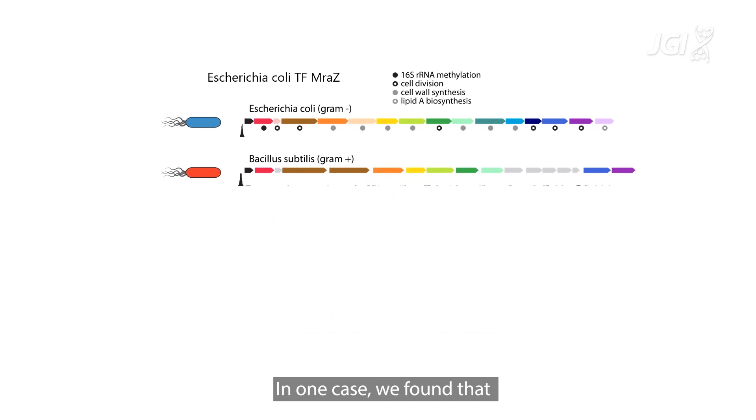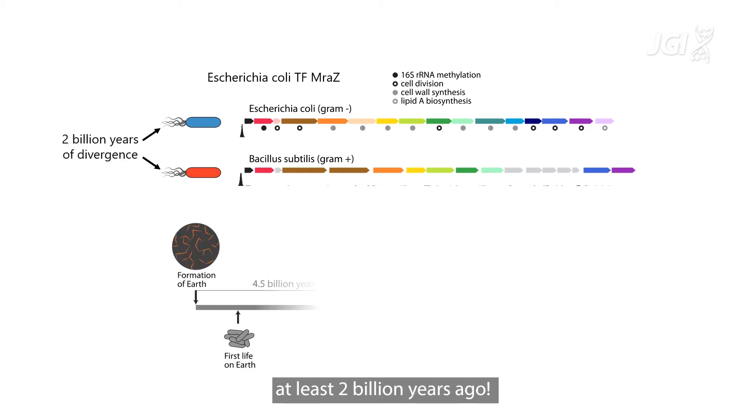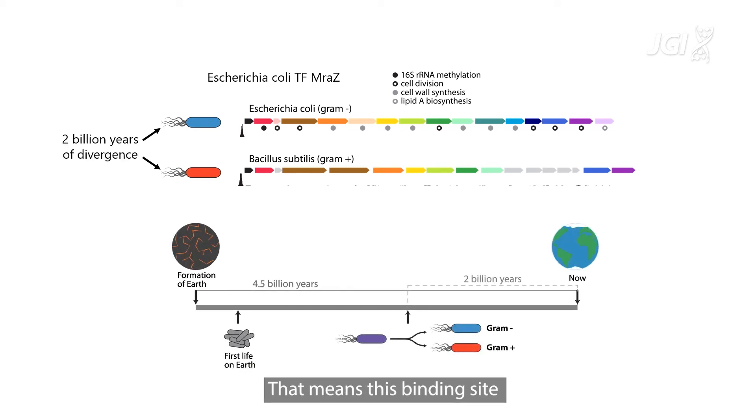In one case, we found that the E. coli transcription factor MraZ, which is involved in cell division, can still bind specifically to the corresponding orthologous genes in Bacillus subtilis, even though these species diverged at least 2 billion years ago. That means this binding site is nearly as old as bacteria themselves.